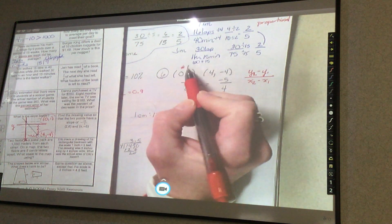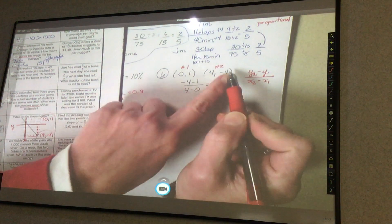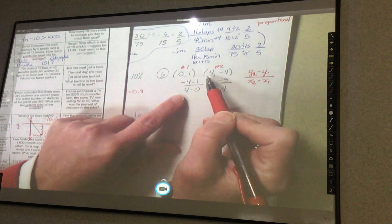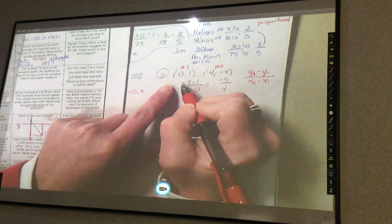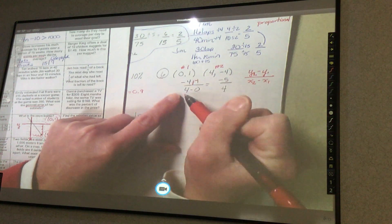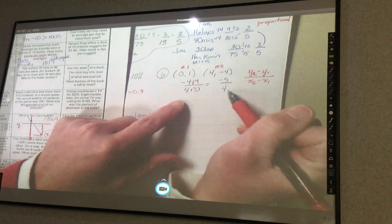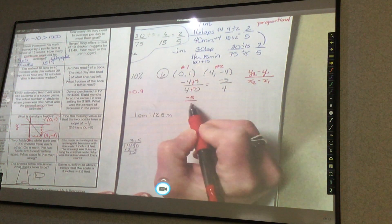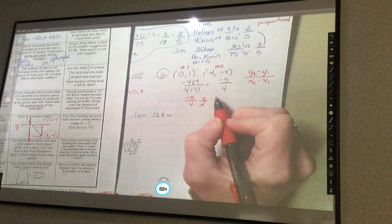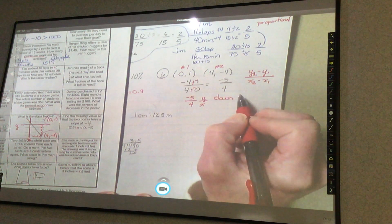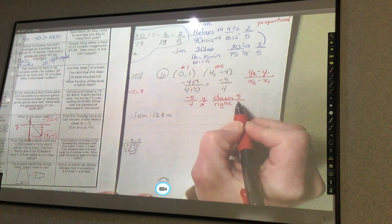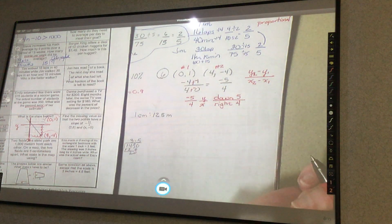So then I go, these are my points number 1, these are points number 2, so I put it in. Y2 is a negative 4, minus Y1 is 1. X2 is 4, minus X1 is 0. So then I come through, and I go keep, change, change, so negative 4 plus negative 1 is a negative 5. Keep, change, change, and I can subtract 0, and I still get 4. So if I have a negative 5 over 4, this is my Y over my X. So a negative 5 means it goes down 5, and a positive 4 means it goes right 4. Don't forget to write that part.